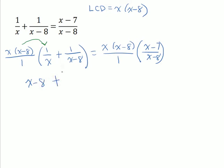Now we're adding. When we do our next multiplication, this x minus 8 and that x minus 8 are going to divide out. That leaves us to multiply x times 1, and x times 1 is x.